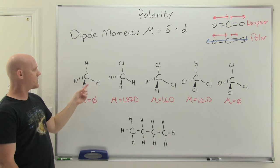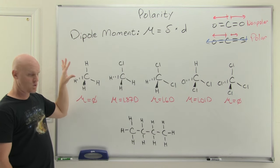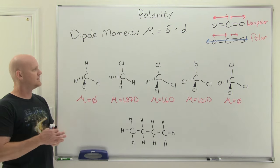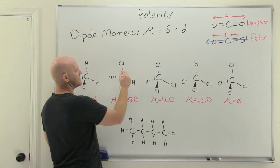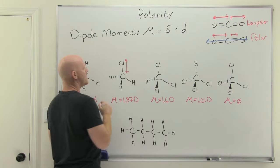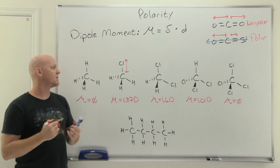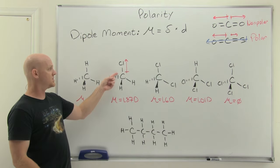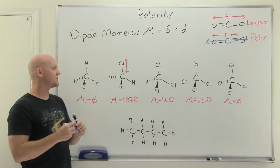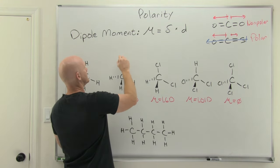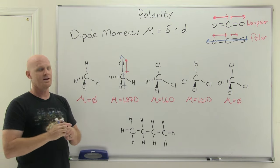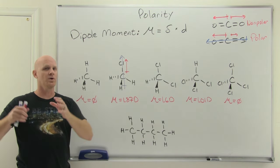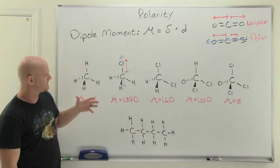Looking at this series of molecules: methane has no polar bonds whatsoever, so the overall dipole moment is zero — it's a non-polar molecule. In the next example, the carbon-chlorine bond is polar; chlorine is significantly more electronegative than carbon. That's the only polar bond, so there's nothing to cancel it out. The entire molecule has a dipole running right up the center: the bottom part is partially positive, the top part partially negative. The dipole moment is 1.87 Debye.